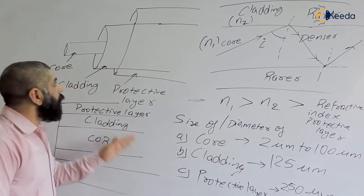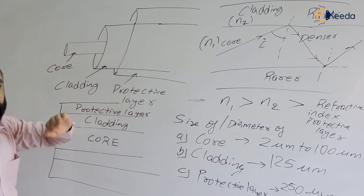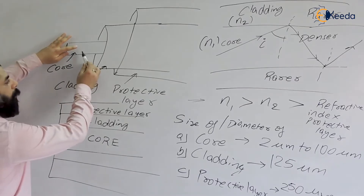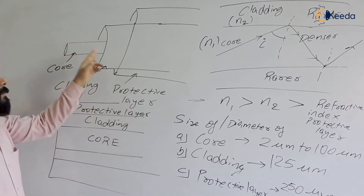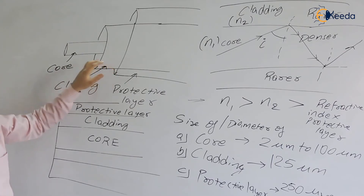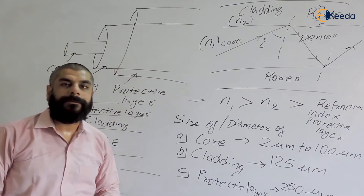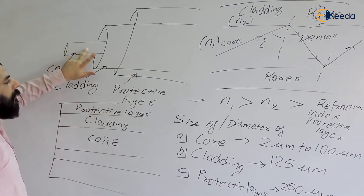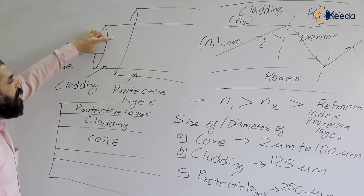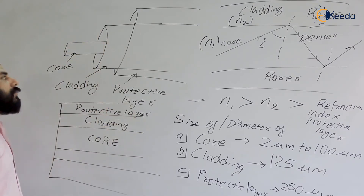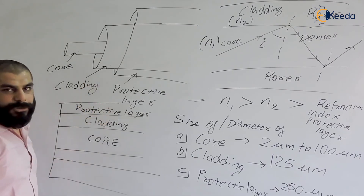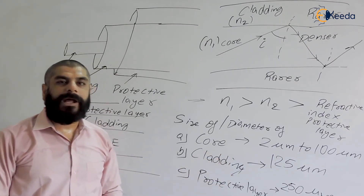Now let's see what materials are used to prepare optical fiber. Both core and cladding can be made of glass — which is essentially silica glass. Both core and cladding can also be made of plastic. Or the core can be made of glass while the cladding is made of plastic. However, the reverse — core as plastic and cladding as glass — is never preferred. Next we'll discuss the advantages of optical fiber.